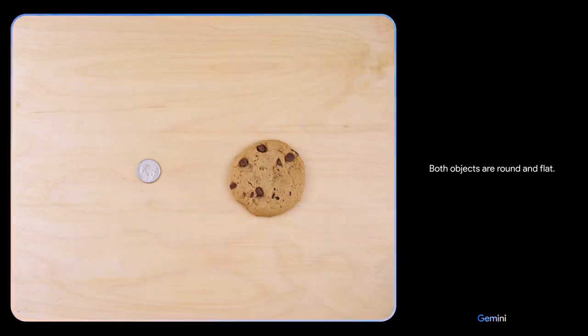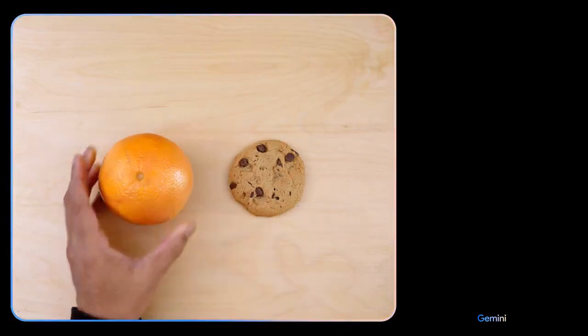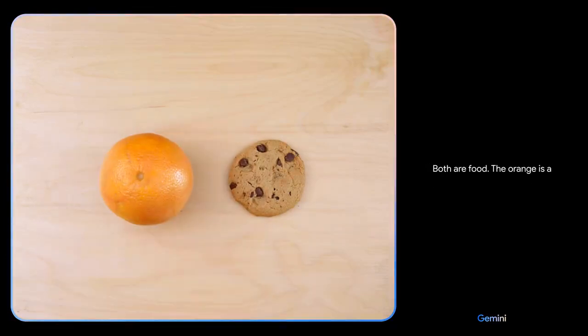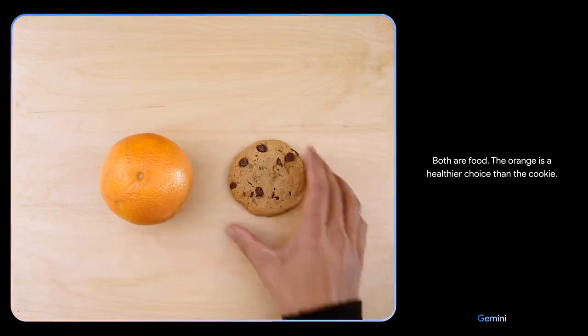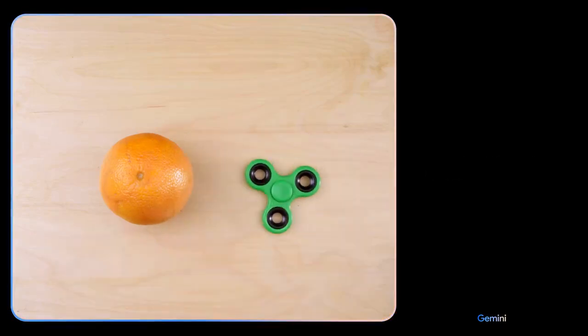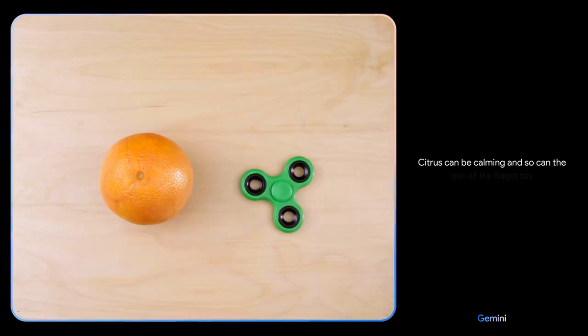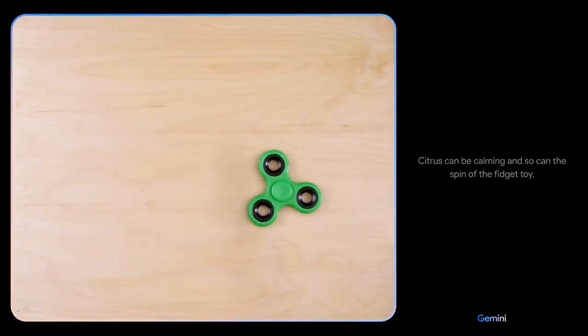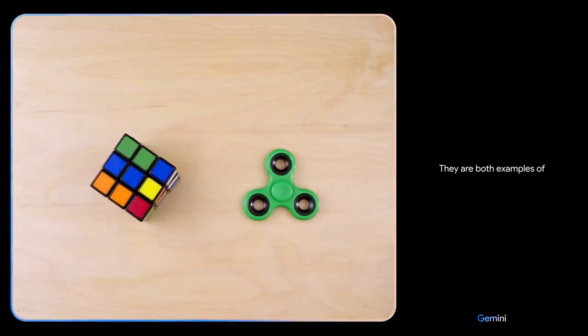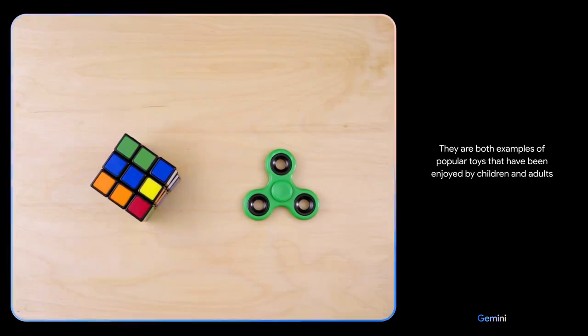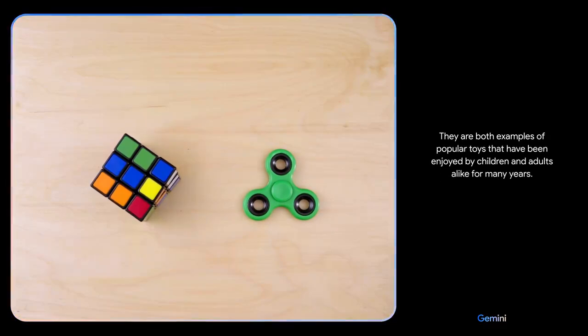Both objects are round and flat. There you go. Both are food. The orange is a healthier choice than the cookie. Citrus can be calming and so can the spin of the fidget toy. They are both examples of popular toys that have been enjoyed by children and adults alike for many years.